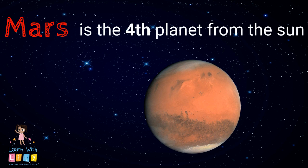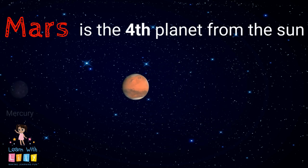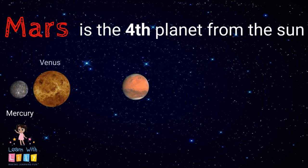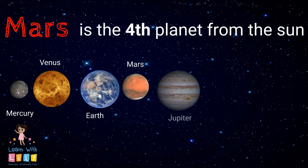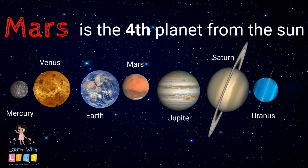Mars is the fourth planet from the Sun in our solar system. The order of the planets are Mercury, Venus, Earth, Mars, Jupiter, Saturn, Uranus, and Neptune.